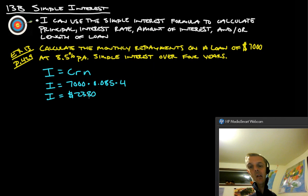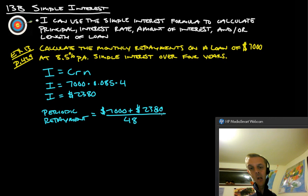Alright? So, that's the interest that you're gonna accrue with your $7,000 loan over four years. So, to figure out the repayments, periodic repayment is going to be $7,000, that's the principal, plus the interest, which is 2380. And we're gonna take that and divide that by the total repayments. Now, it's four years and monthly repayments. So, you gotta do 4 times 12, which would give us 48.